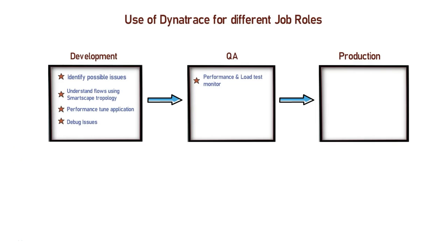Apart from this, Dynatrace will also help you in finding the exact location where your application is breaking. You can also monitor your QA environment when you test your application for defects. If your application crashes or functionally fails, Dynatrace will help you in debugging to find the root cause. Before you start testing, you can configure Dynatrace to monitor the log files in the QA environment to look for potential errors. While you perform testing, Dynatrace will look for errors in your application logs and will alert you with a notification once an error pops up.